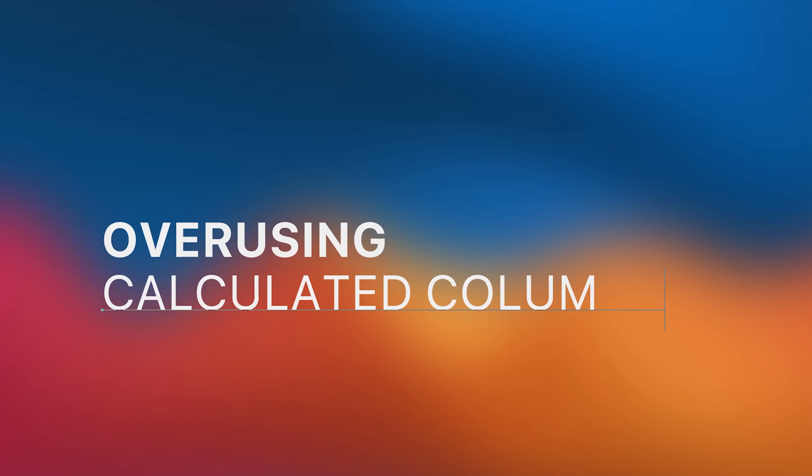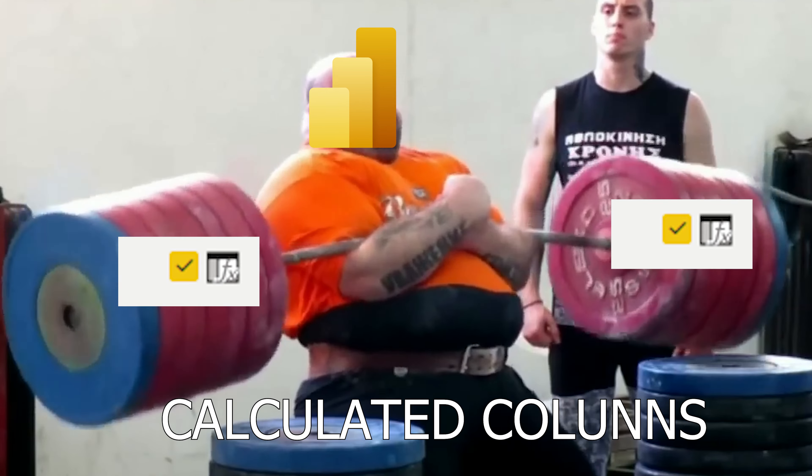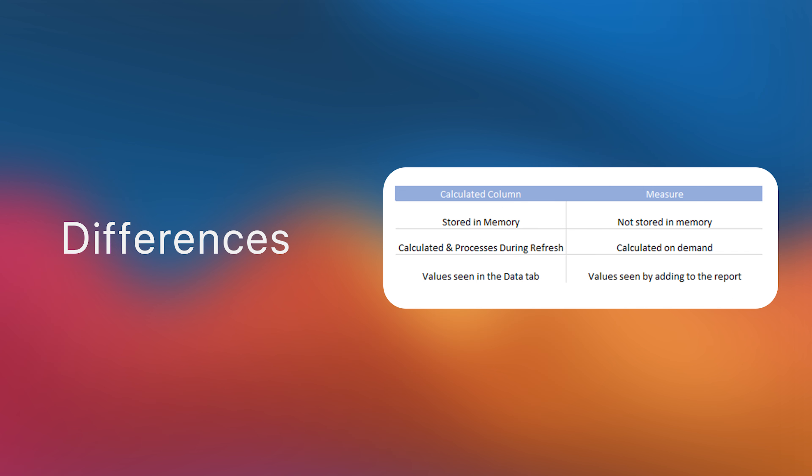The second thing I often see juniors do is use calculated columns far too often. This really bloats your data model because it's physical storage — when you create a calculated column, it stores those results in memory. There are scenarios for it, but when people don't understand iterator functions and refer back to calculated columns instead of creating measures, that can really bloat your model.